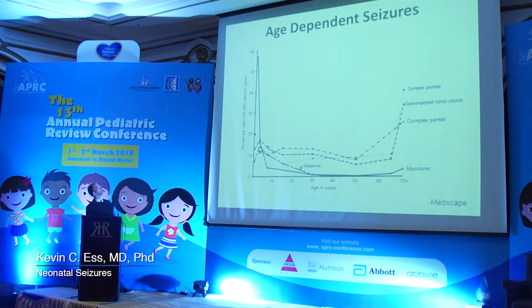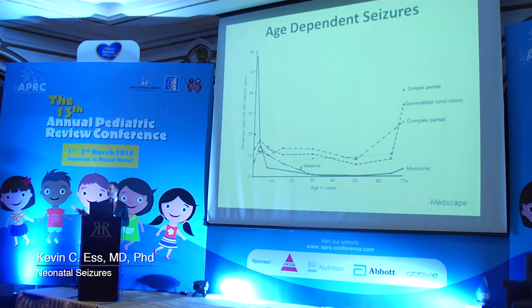Here's a graph—we're all on this graph—showing the incidence of seizures across the lifespan. Look at the huge incidence in the youngest group, and then it all goes down. We're all probably enjoying this period of our life, and as you get older it goes up again, but all for very different reasons. This huge spike in the youngest population is really the neonatal seizures we'll talk about.